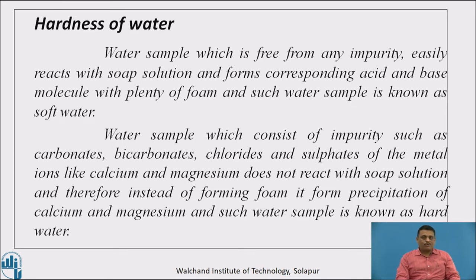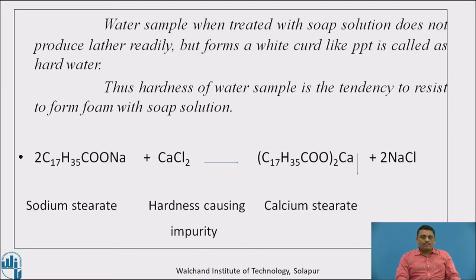So what is hardness of water? Rain water is the single source of water on earth and is one of the purest sources. But when rain water joins the earth, it gets dissolved with impurities like carbonates, bicarbonates, chlorides and sulphates and may acquire hardness. A water sample that when treated with soap solution does not produce lather readily but forms a white curd-like precipitate is called hard water. Thus hardness of water is the tendency to resist forming foam with soap solution.